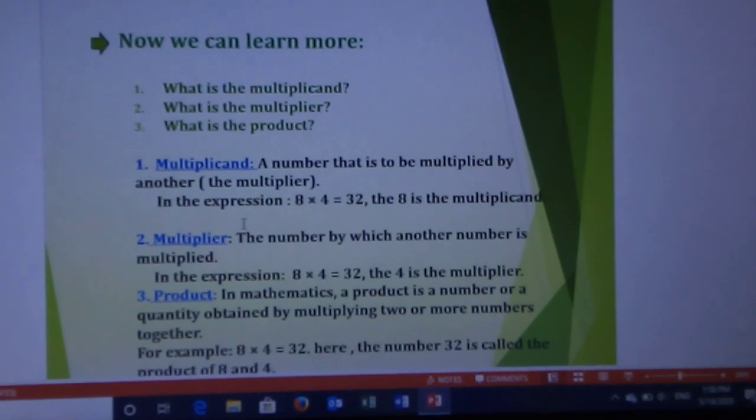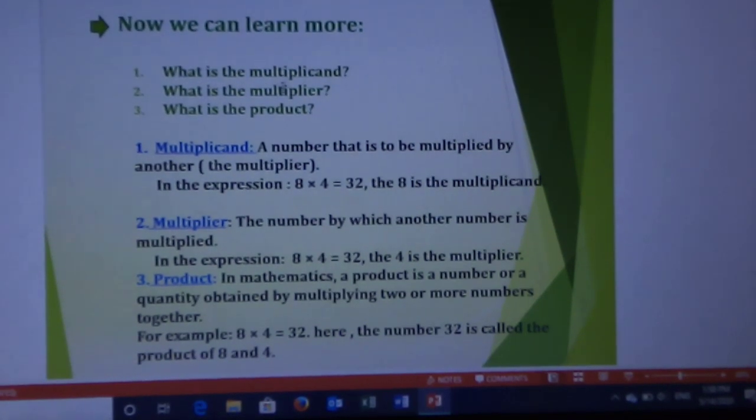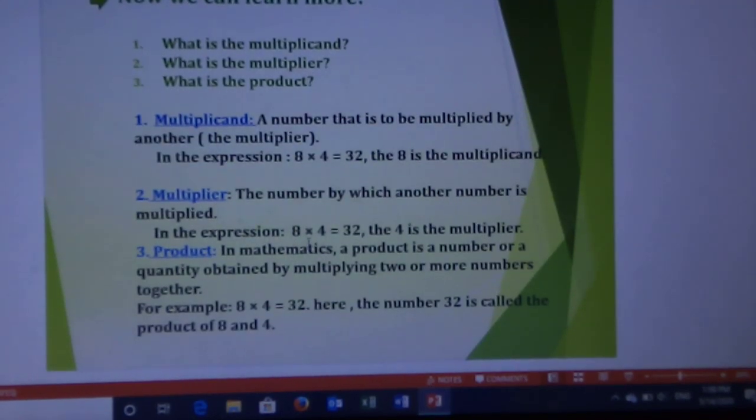Now we can learn more: what is the multiplicand, number two what is the multiplier, number three what is the product. Multiplicand: a number that is to be multiplied by another. In the expression 8 × 4 = 32, the 8 is the multiplicand. Number two, Multiplier: the number by which another number is multiplied. In the expression 8 × 4 = 32, the 4 is the multiplier.